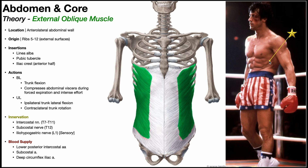At the star right here, this is actually the external oblique muscle on the left. In the picture here in green, we have the muscular part of the muscle, and then this white tissue is the aponeurosis of the external oblique. We'll talk about that more in just a minute.